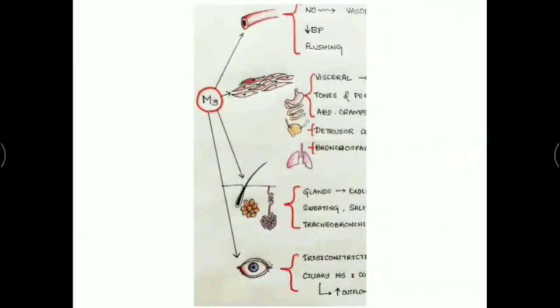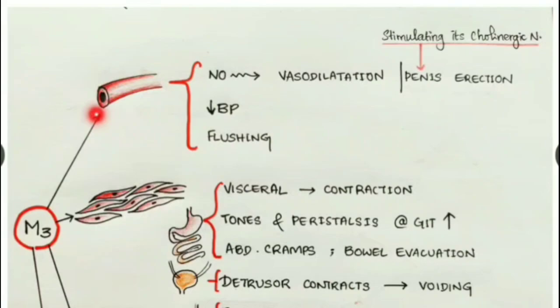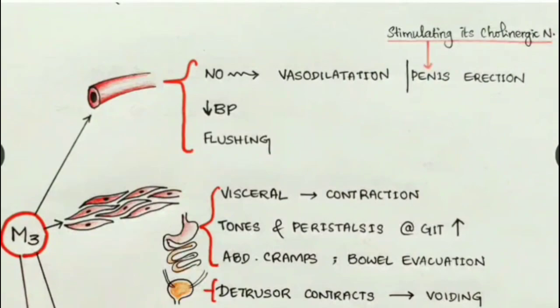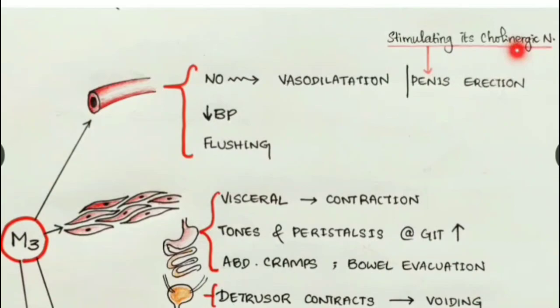Stimulating M3 receptors of the blood vessels causes release of nitric oxide, which causes vasodilation. As a result of this vasodilation, there is decreased blood pressure and flushing. Nitric oxide, by stimulating cholinergic nerves at the penis, causes vasodilation and blood to pool in the penile tissues, causing penile erection.